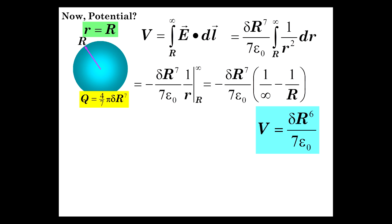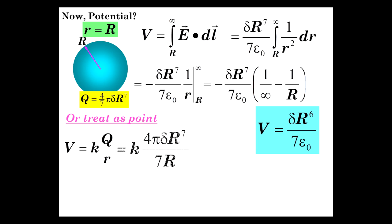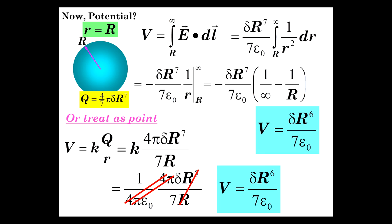This is really abstract, but you're used to that. Here's a useful trick: we can figure out this potential by considering the sphere as a point charge. From a distance away, the sphere looks like a point, and its effect on the outside universe is the same as a point charge. So using V = kq/r = q/(4πε₀r), with q = 4/7 πδR⁷, we get: (1/4πε₀)(4πδR⁷/7)/R = δR⁶/(7ε₀). Sure enough, same answer.